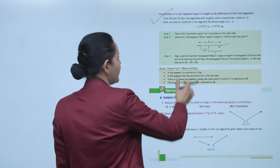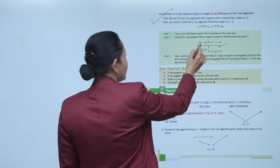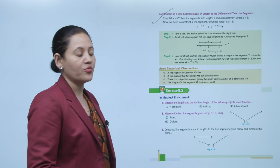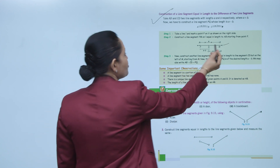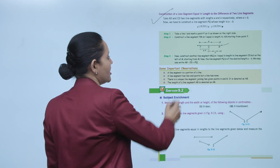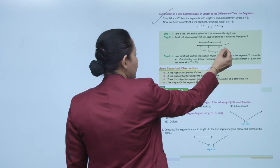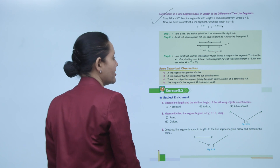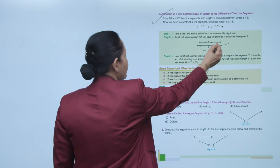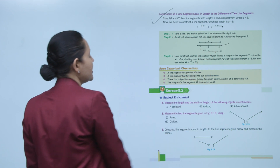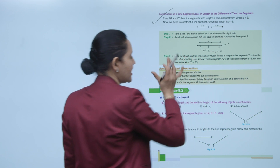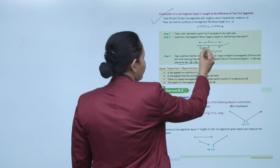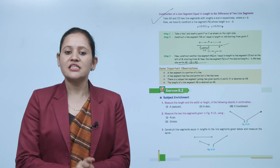Step 3: construct another line segment MQ on L, equal to the length of CD, but starting from M going left. Now the line segment PQ is of the desired length A − B. We may write AB − CD = PQ.